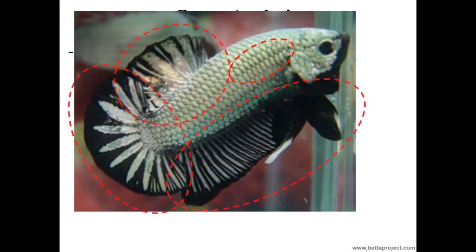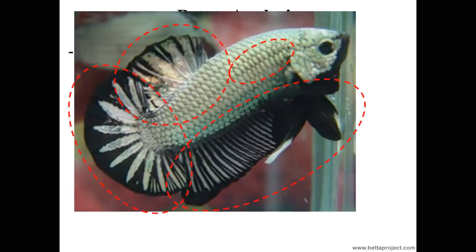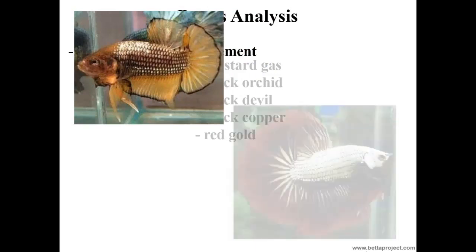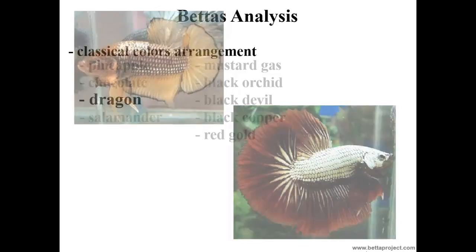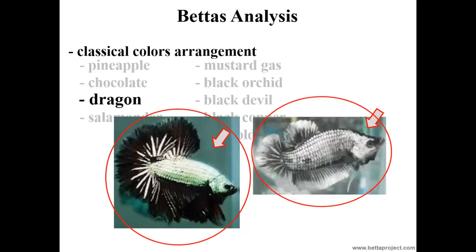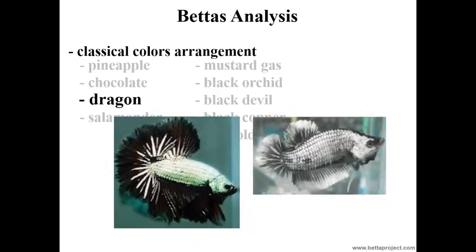About the types of mantle: it may be partial, covering only part of the body from the pectoral fins until the caudal peduncle base, or total, including the head. Comparing two black dragons: although one is long fin and the other is plakat, those traits must not influence the definition of which has the better dragon arrangement. Observing them, the first black dragon has better definition in the color arrangement — it shows itself more clean with best color drawings when compared with the other betta, and presents a better mask.